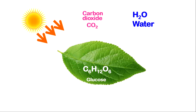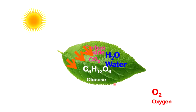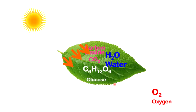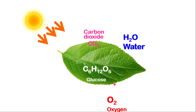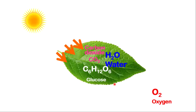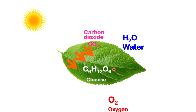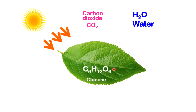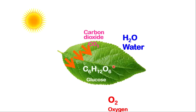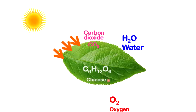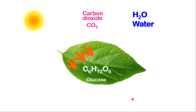Photosynthesis takes place inside of an organ known as the leaf. So the leaf is the organ for photosynthesis. What is happening in the leaf is that the leaf will absorb some light. Inside of the leaf, carbon dioxide and water will be combined to give you glucose, and oxygen will be produced.